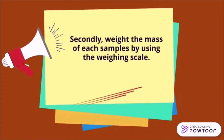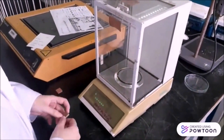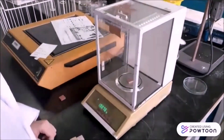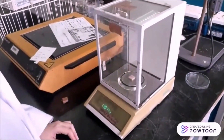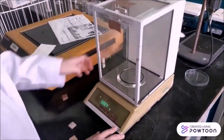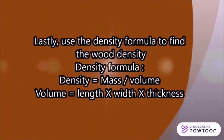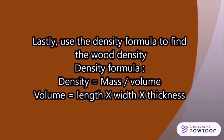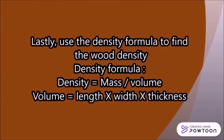Secondly, we measure the mass of each sample using the weighing scale. Lastly, we use the density formula to find the wood density, which is mass divided by volume. The volume is calculated as length times width times thickness.